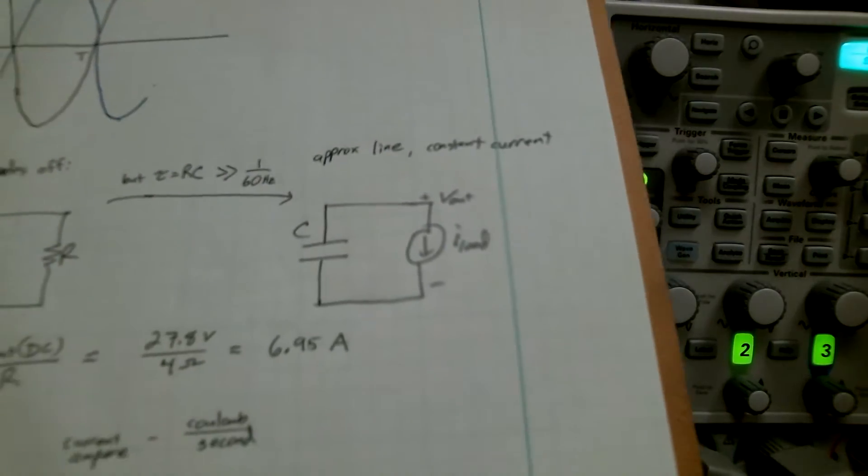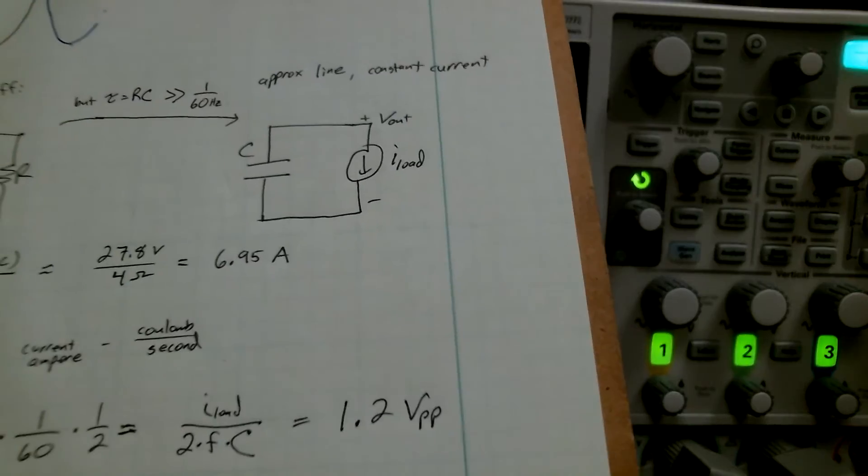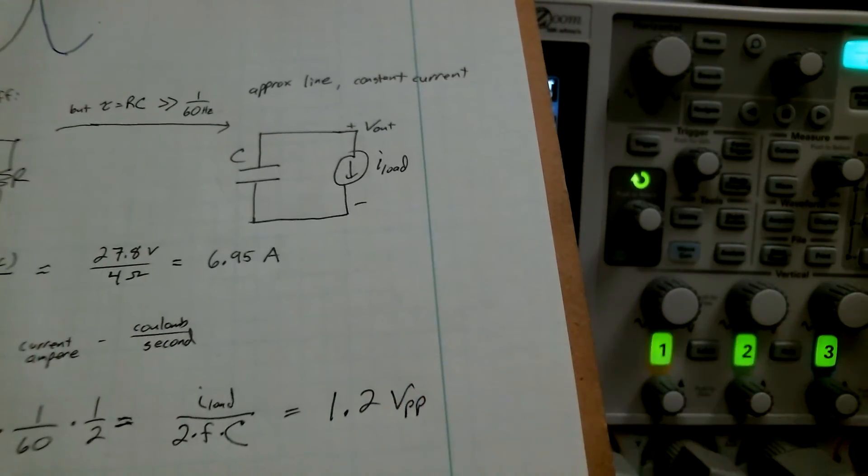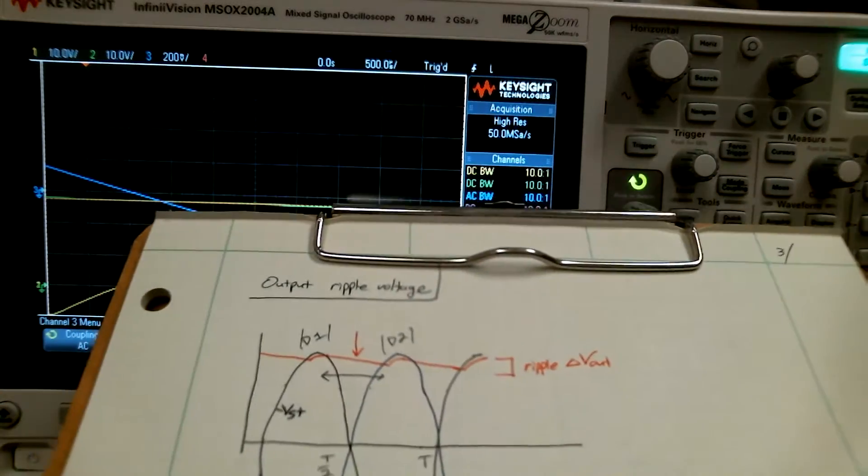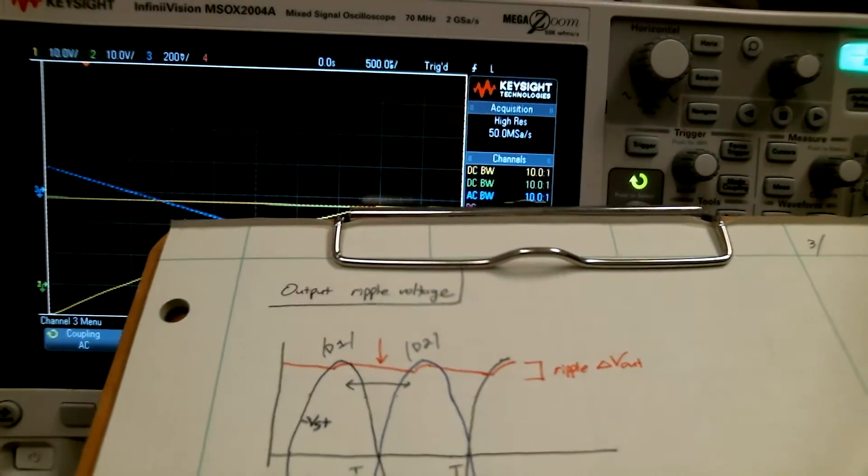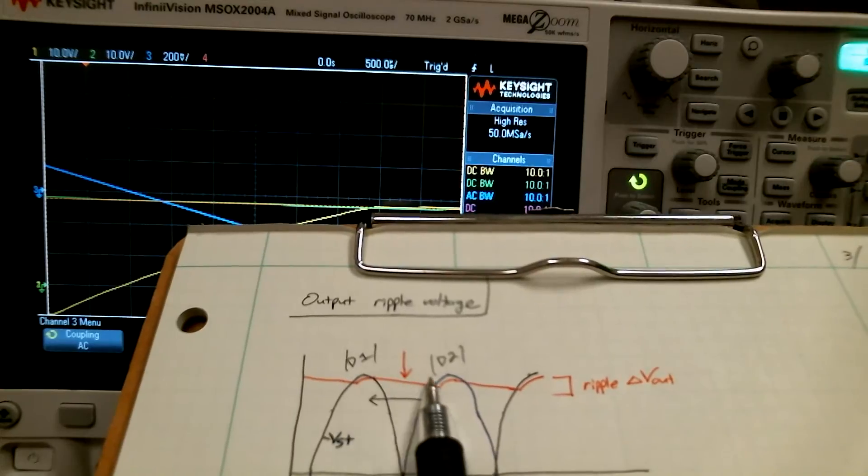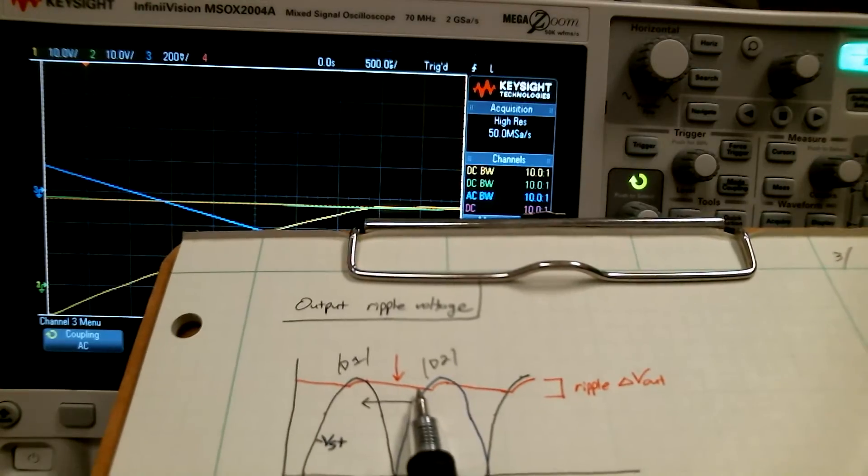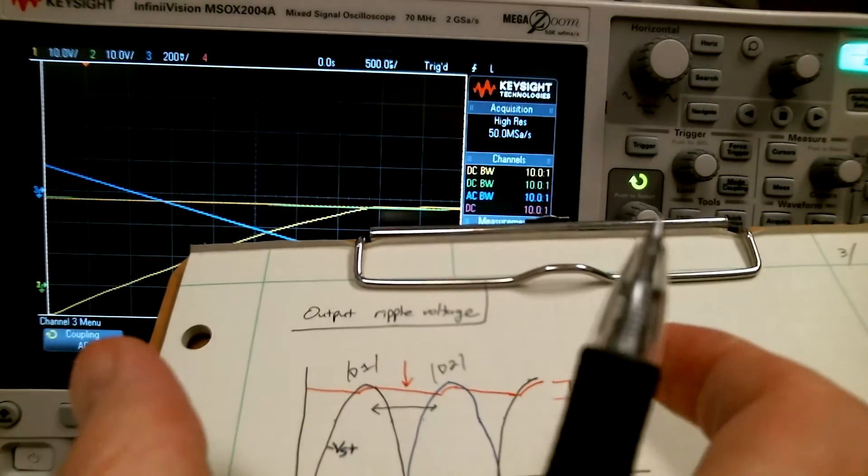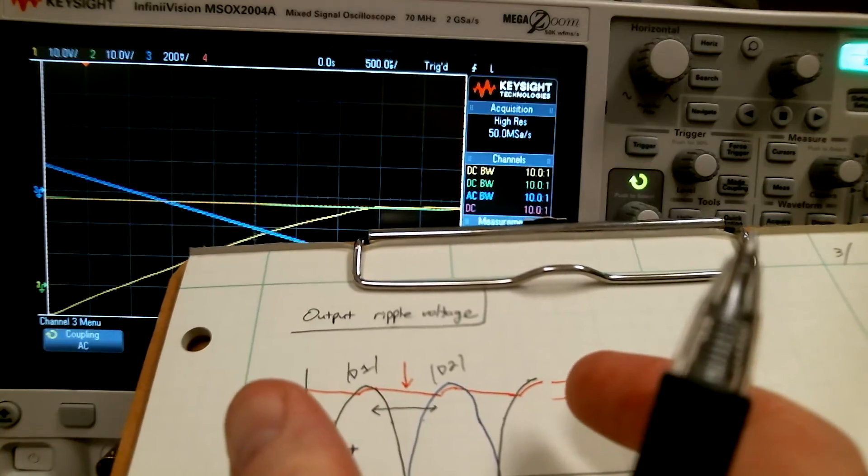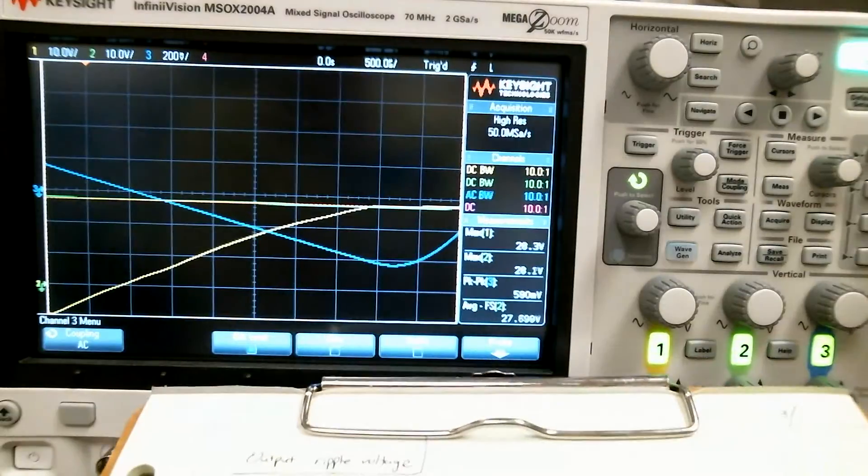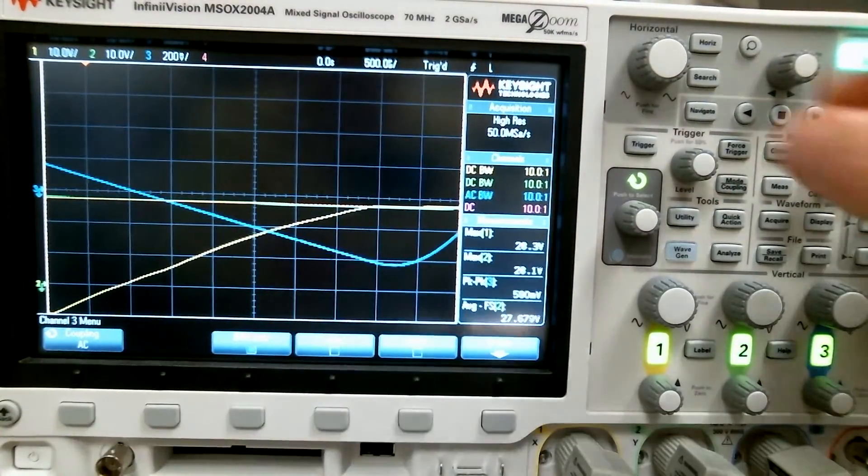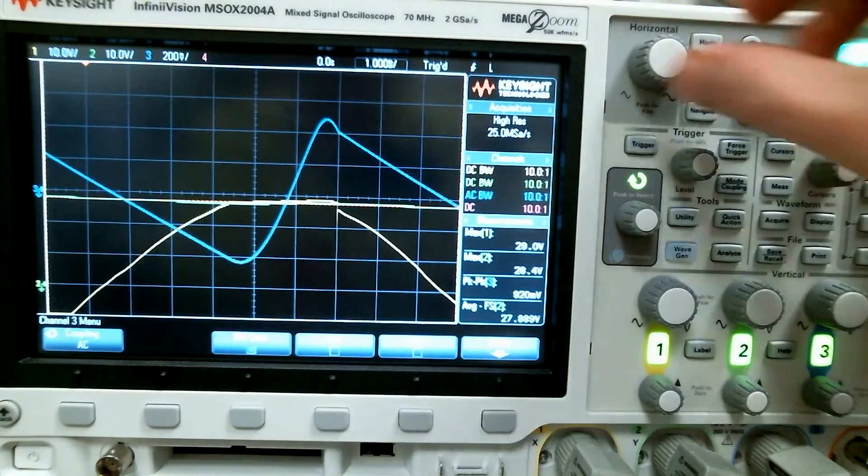Remember we calculated 1.2 volts peak-to-peak. What's up? Why is this less? It's less because we calculated assuming that our discharge time was the entire half cycle. We're not discharging for the entire half cycle - our interval is smaller. If our time is smaller, our delta V is smaller. So this is right on.